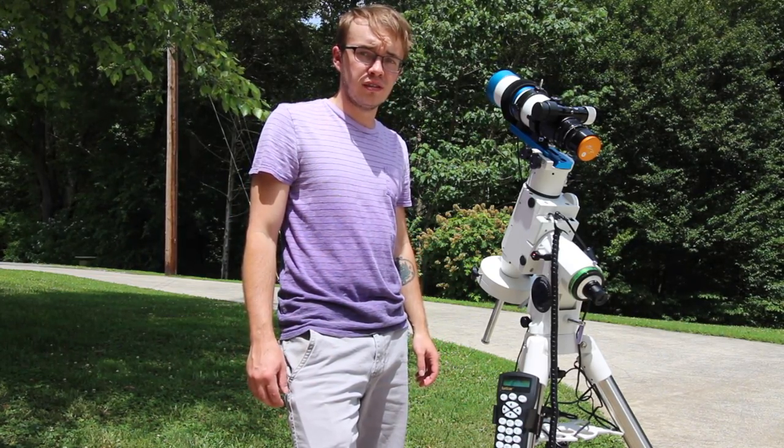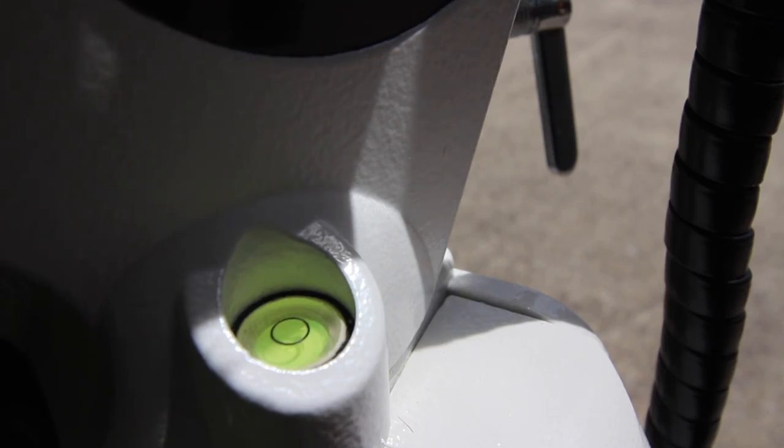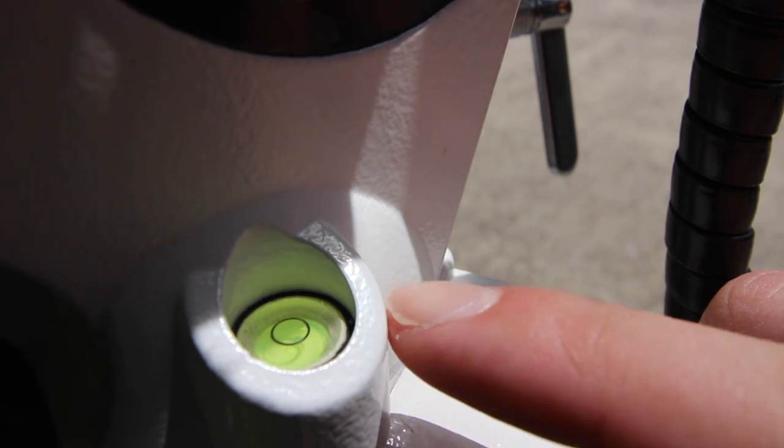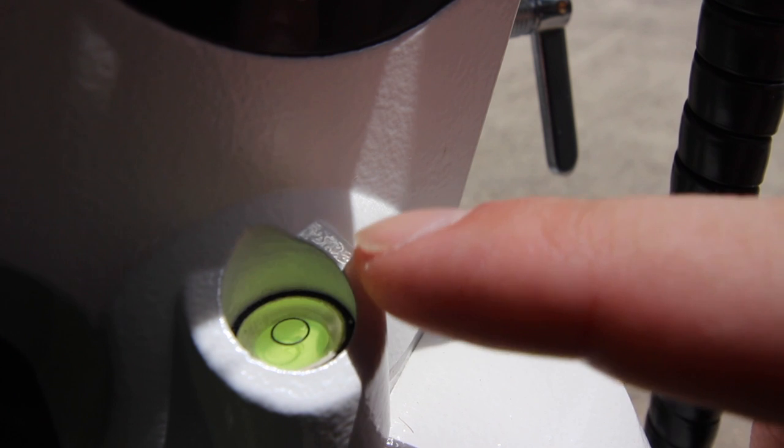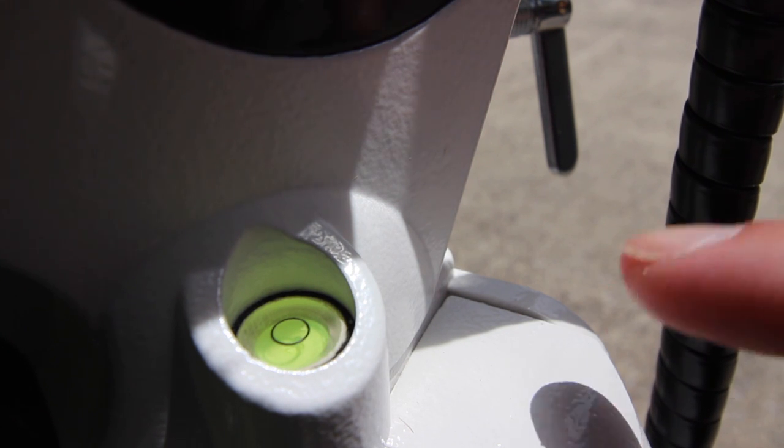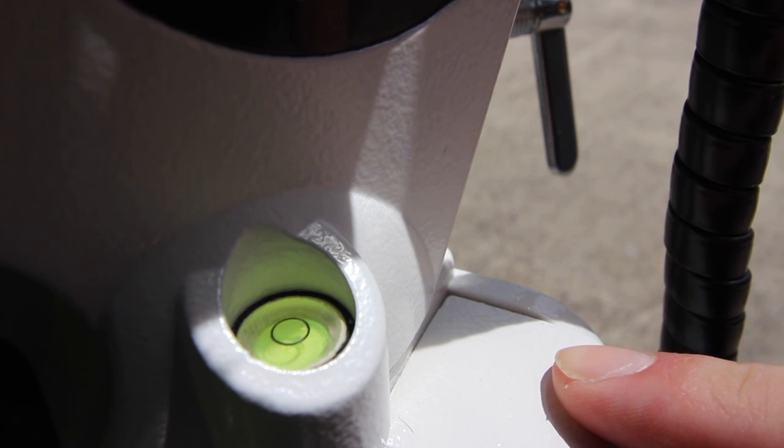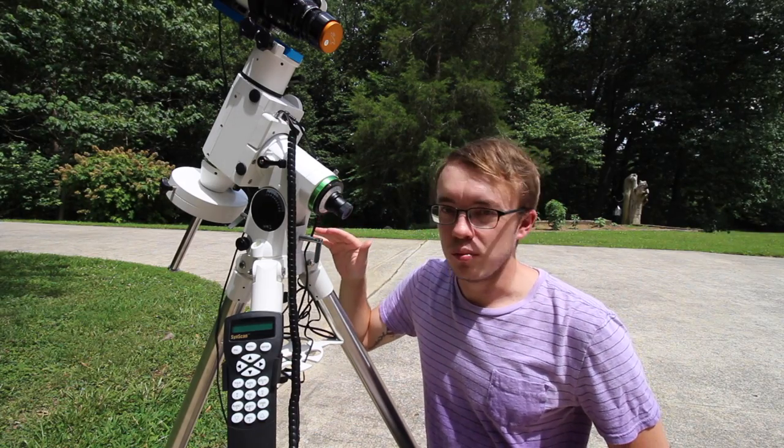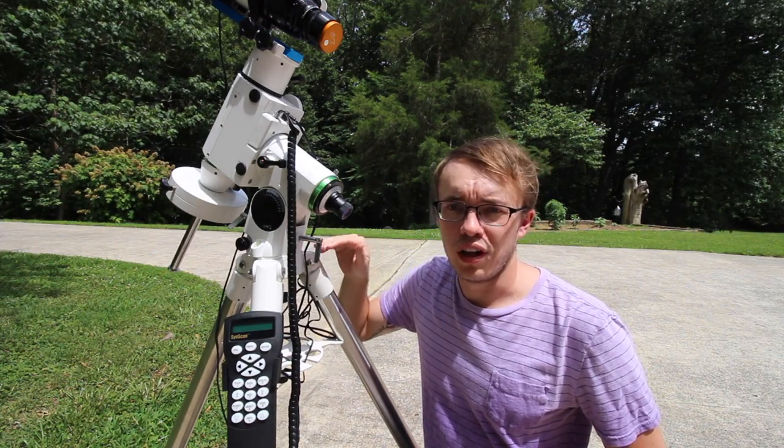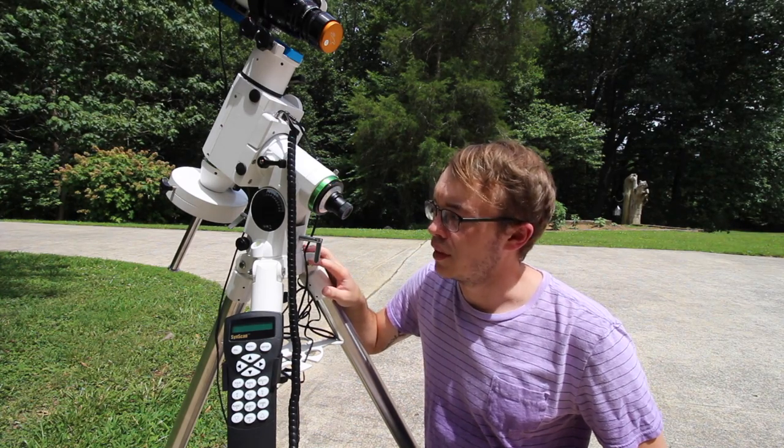First things first: make sure that your bubble level here, located on pretty much every equatorial mount, is as even as possible. Because even if this is off just a little bit, your entire polar alignment process is going to be off. Now that you've got everything balanced out and the bubble level perfectly situated, it's time to start the polar alignment process.